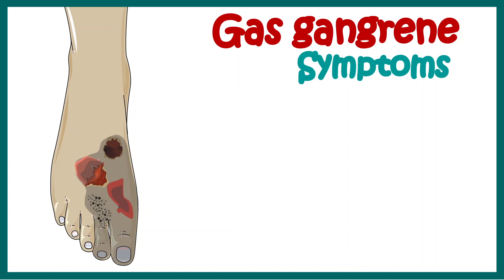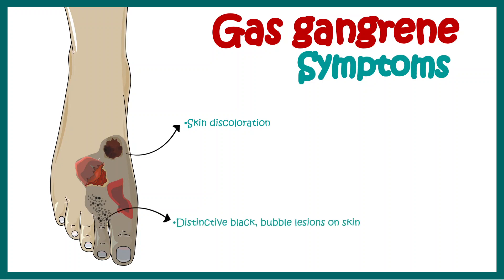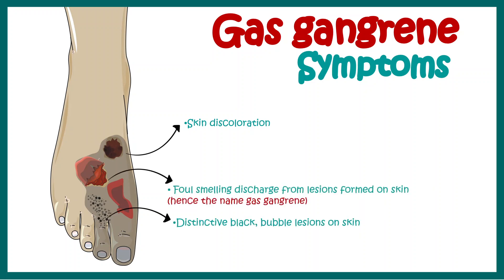Let's look at the symptoms quickly. There could be skin discoloration, blackening of the skin, and a characteristic black bubble lesion on the skin. There could be foul-smelling discharge from the lesions around the skin — and that is why the name gas gangrene. Other than that, there could be swelling, necrosis, numbness on the affected side, fever, etc.